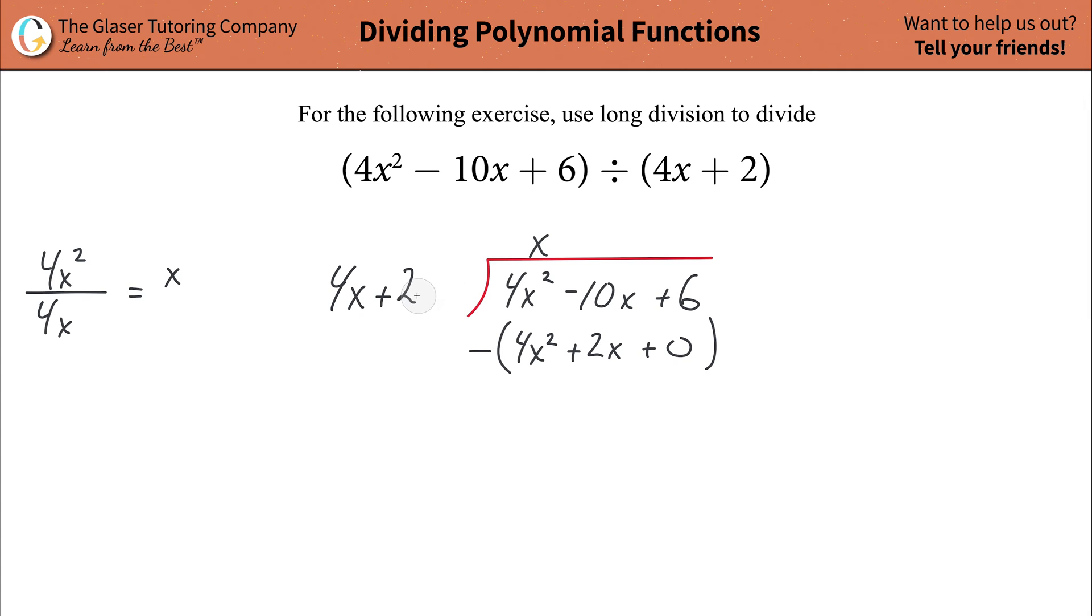Now before you start doing your math, you're going to distribute that negative symbol. So negative sign goes here. So that's going to be negative 4x squared. Then it's going to be a negative 2x. And then it's going to be minus 0. Everything here now becomes negative. Now do the math. 4x squared minus 4x squared just cancels each other out. Negative 10x minus 2x is going to be negative 12x. And positive 6 minus 0 is simply positive 6.